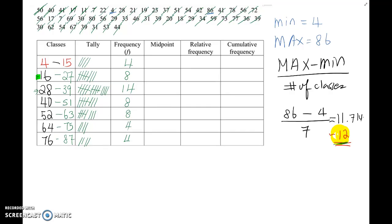Okay. Now, how to find the midpoint? Midpoint is the average between lower limit and upper limit, which means you combine these two values and divide by 2. So if you find the first class midpoint, so 4 plus 15 divided by 2, that will be 9.5.